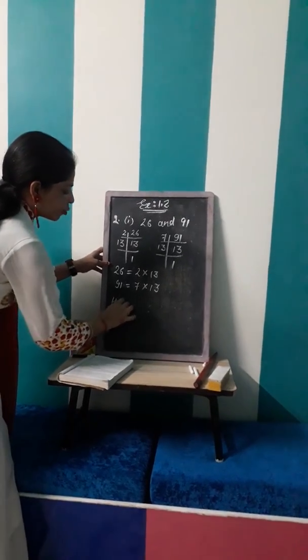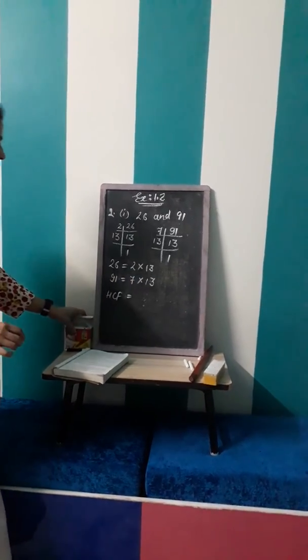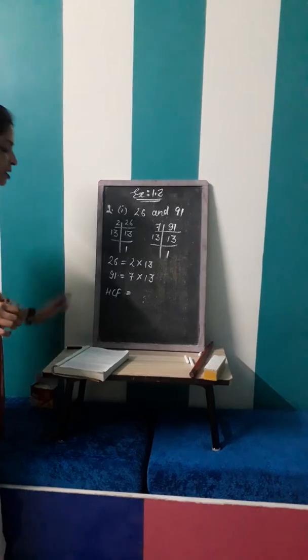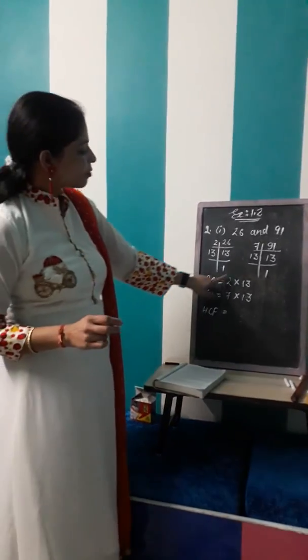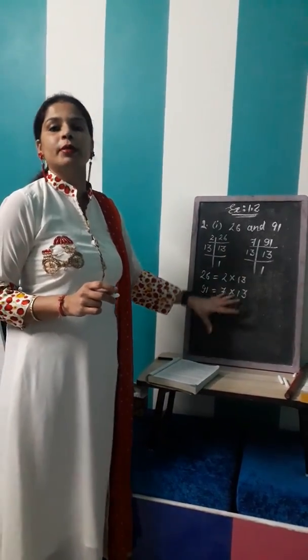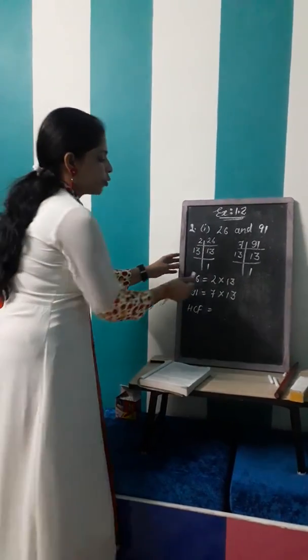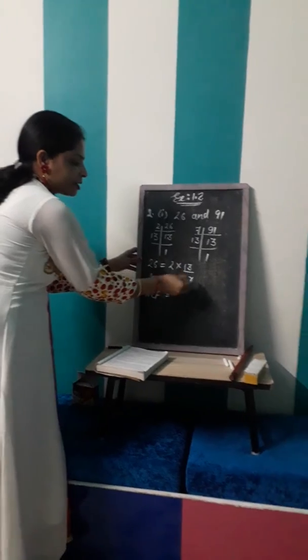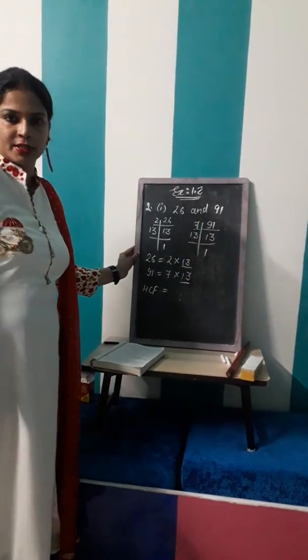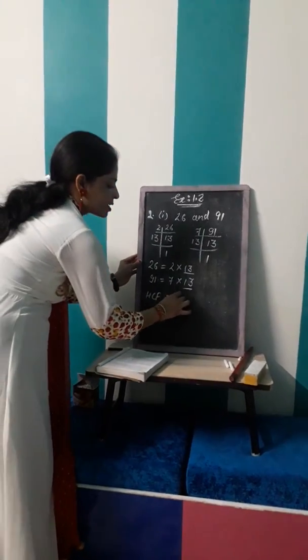Firstly, we will find out the HCF. As the HCF stands highest common factor, so you have to find all the common factors in these two. So you can clearly see that 13 is a common factor. So we will write it as 13.